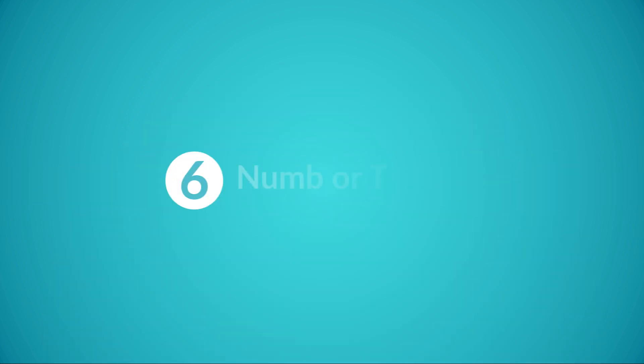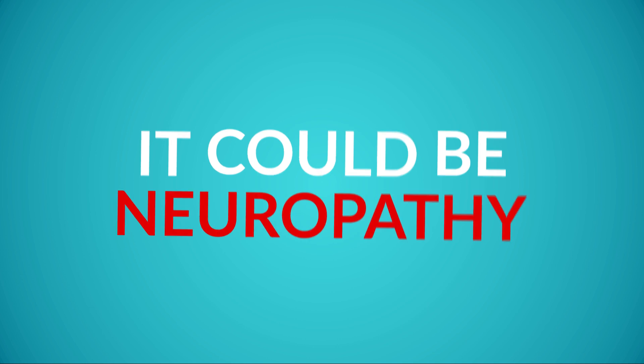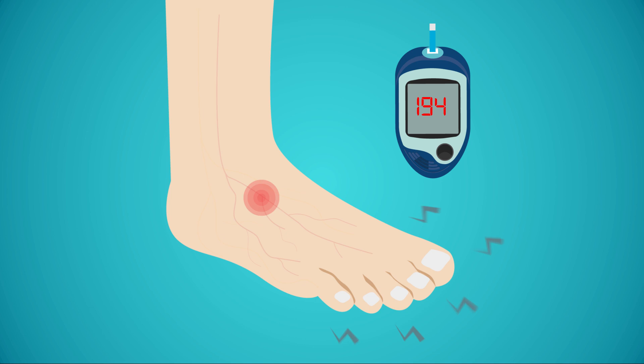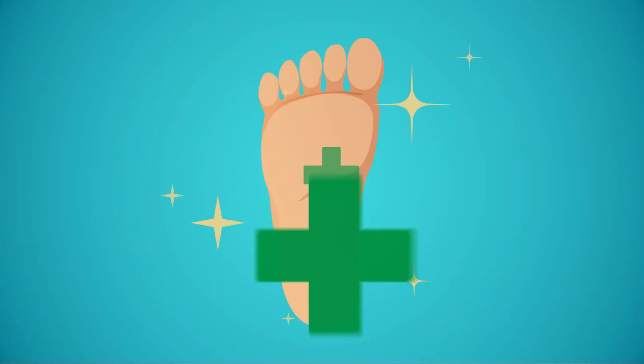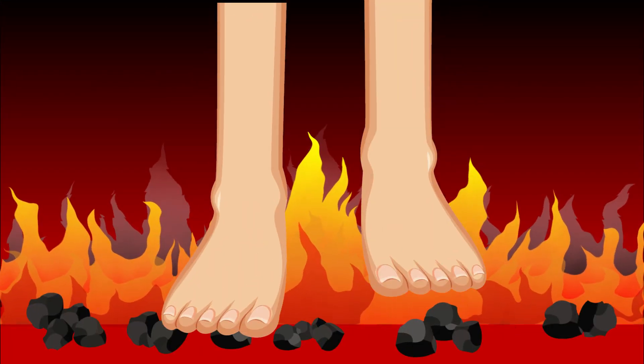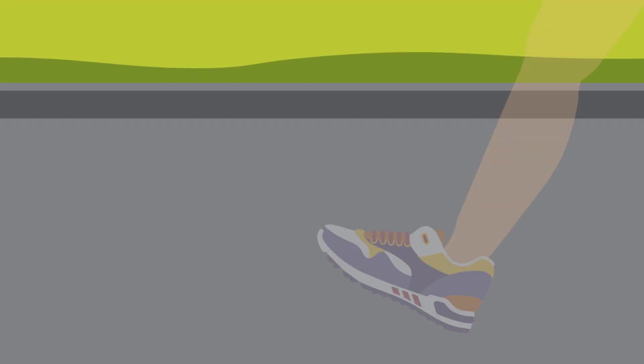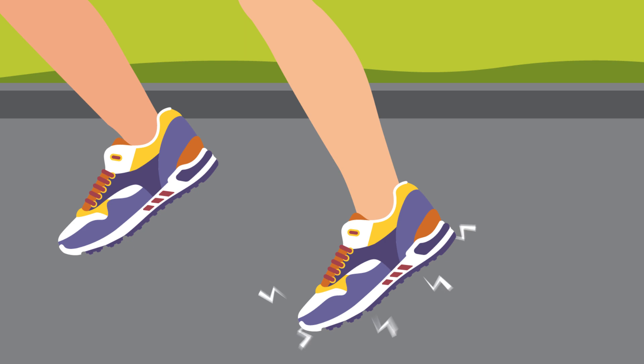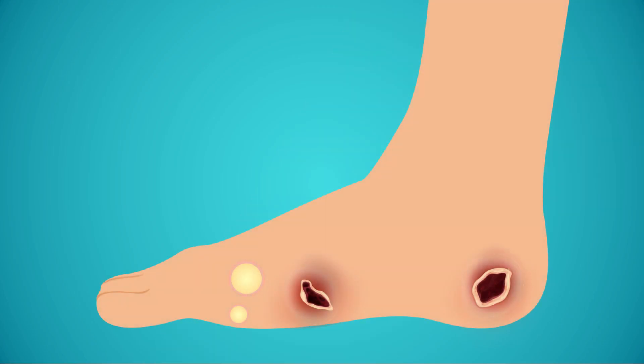6. Numb or Tingling Hands and Feet. If you start to feel a tingling or numbing sensation in your hands or feet, it could be neuropathy. Neuropathy is a type of nerve damage that happens as a result of high blood sugar levels. Foot care for diabetics is very important and you should regularly check your feet. Numbness is especially dangerous because your feet will no longer feel pain as they once did. You may not be aware that you have a blister, bruise, or scrape on your foot. This can quickly lead to an open sore or ulcer. If the sores go untreated, they can become infected.